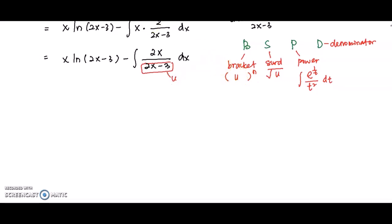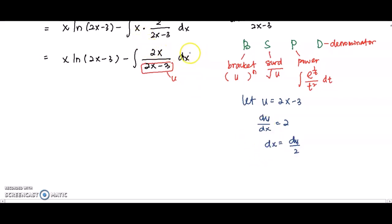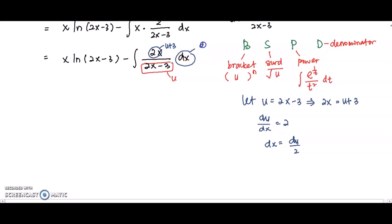Setting u = 2x − 3, we differentiate: du/dx = 2, so dx = du/2. To express 2x in terms of u: from u = 2x − 3, we get 2x = u + 3. So the numerator 2x is replaced by u + 3, the denominator by u, and dx is replaced by du/2. Now everything is in terms of u.